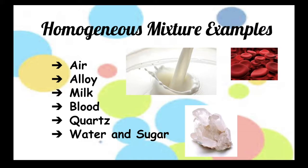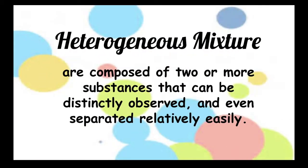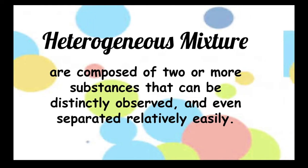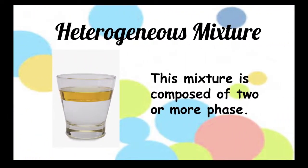The second type of mixture is heterogeneous mixture. These mixtures are composed of two or more substances that can be distinctly observed and even separated relatively easily. These are the mixtures in which the composition is not uniform through the mixture. Heterogeneous mixtures are composed of two or more phases. A phase is any part of a sample that has a uniform composition and properties.